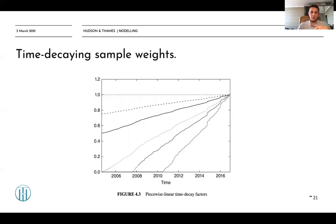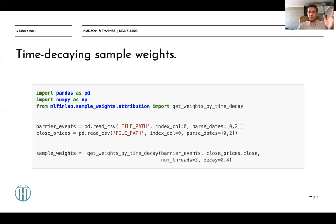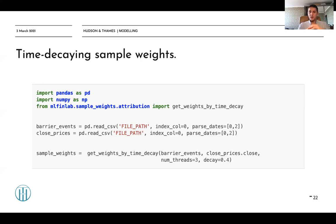Looking at the plot, if we set decay to zero it means we have no time-decaying weights and all weights assigned to our labels will be the same — equivalent to setting sample weights to None. By increasing the decay, you increase how much you penalize the oldest weights. The default value, which is widely used, is decay equal to 0.5. You can start with this setting and see how your model performs under various decay values.